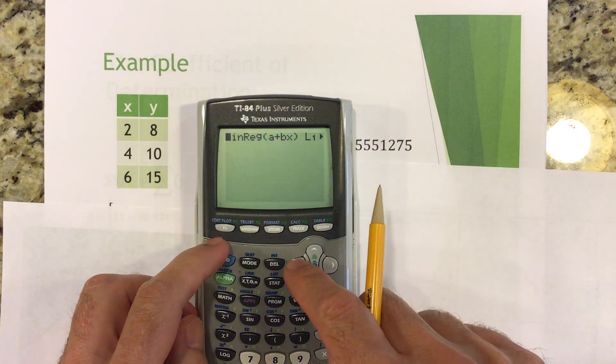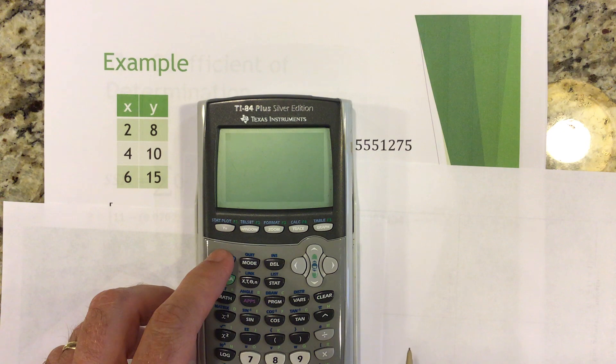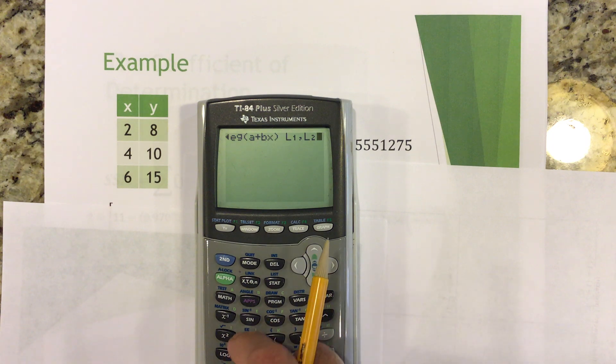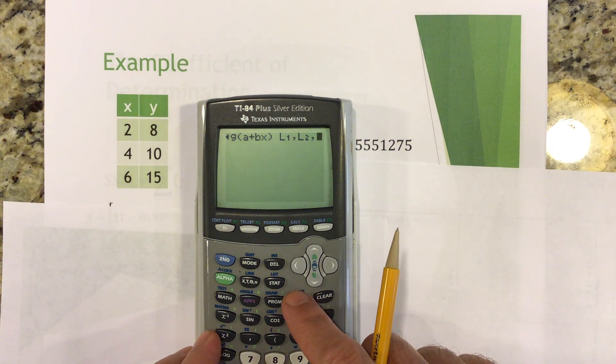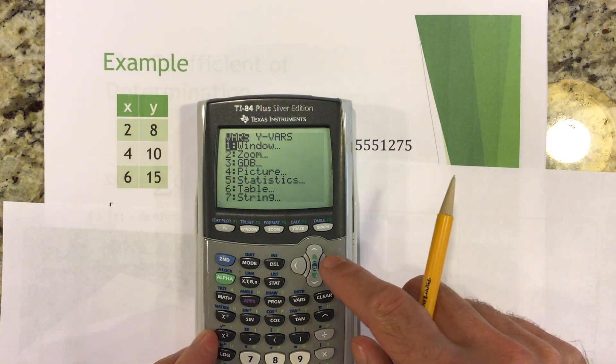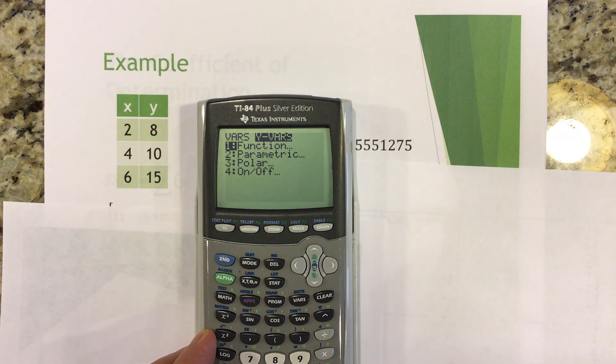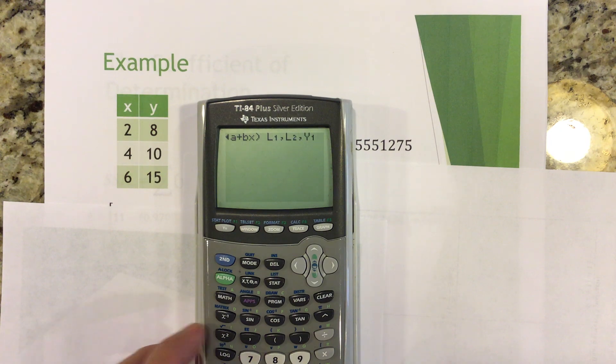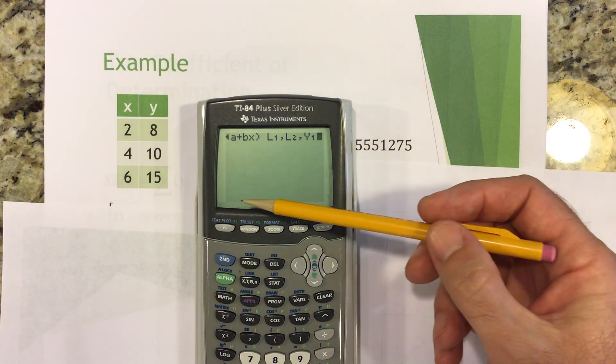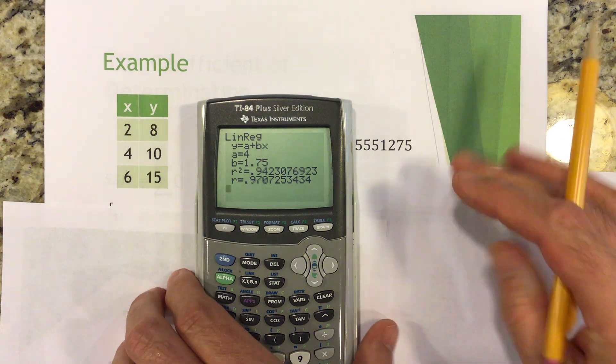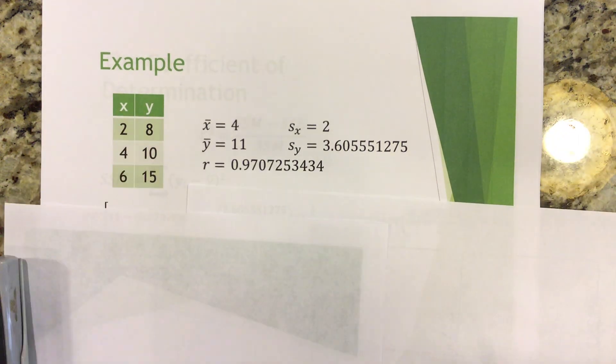Alright. So, list 1 and then y was in list 2. And now, here's where I'm going to put on one more comma. And, I'm going to go to variables. I'm going to go to y variables. And, this is important to notice. Notice number one, it says function. Okay. So, I choose that. And then, I'm going to have it put the function into my y sub 1 menu. Okay. Remember though, function, this is functional notation that it's using. That's going to be handy later. Alright. So, there's my r value. My correlation coefficient.